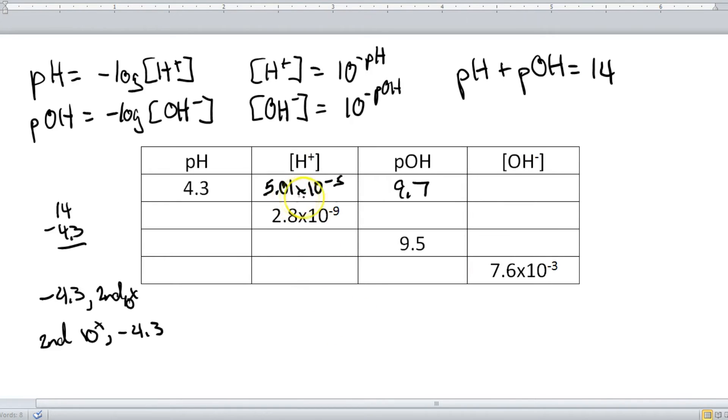Now some calculators won't automatically put that in scientific notation for you, so you'll have to do that on your own. Just remember to move the decimal over and count the number of decimal places and that's your exponent. So we're going to do the same process now. We're going to take the pOH in order to find the hydroxide concentration.